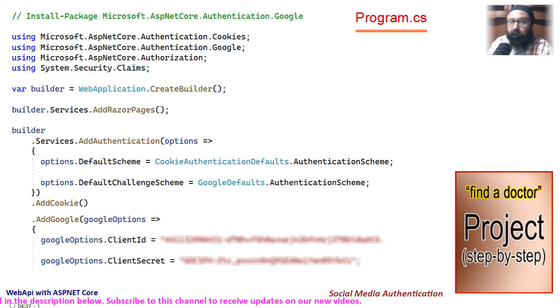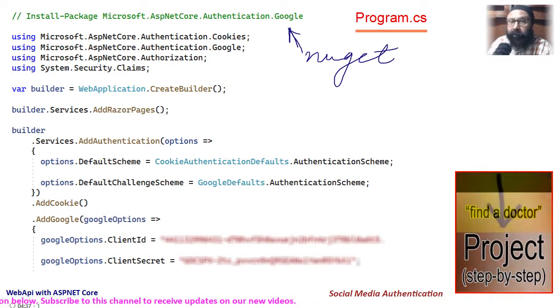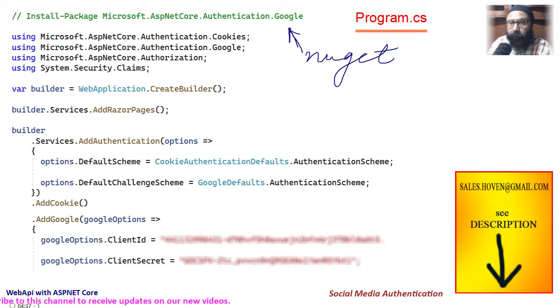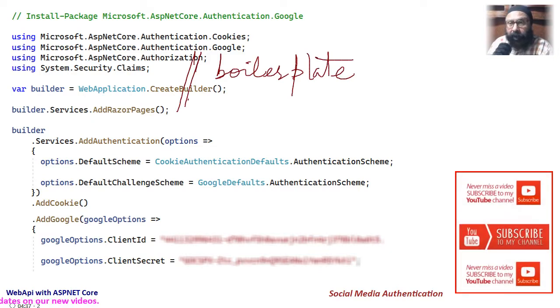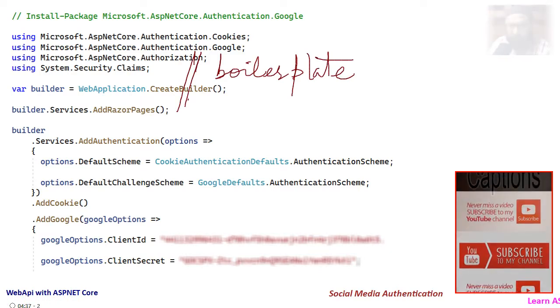You will have to install this NuGet package for the code to compile. Then we have the namespaces and the usual calls to create builder and add razor pages.